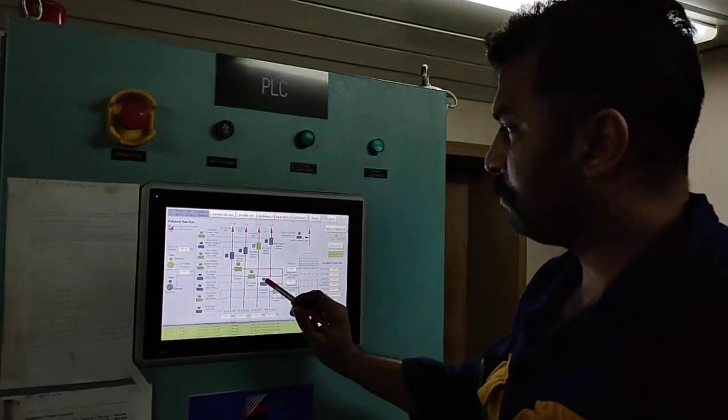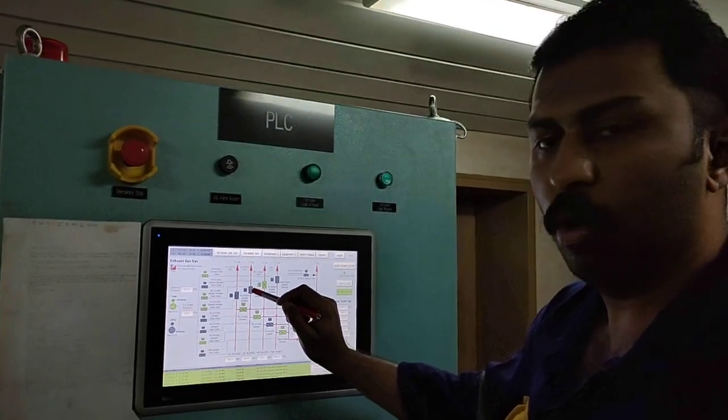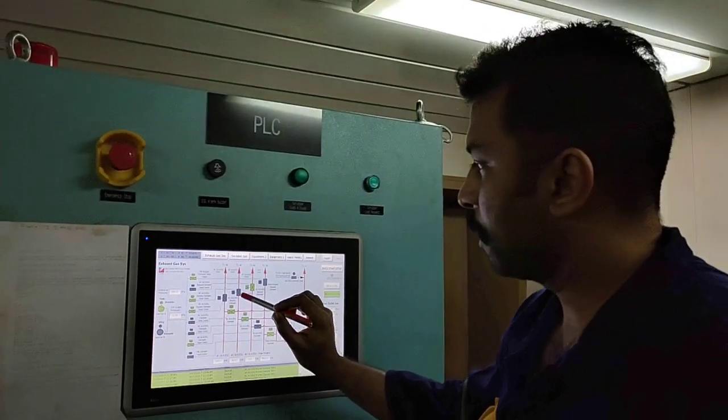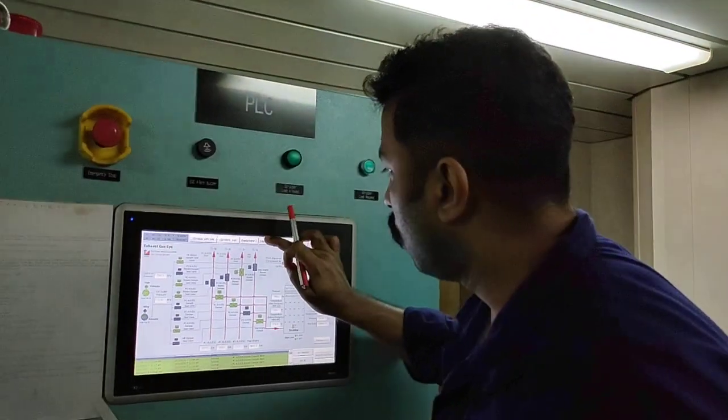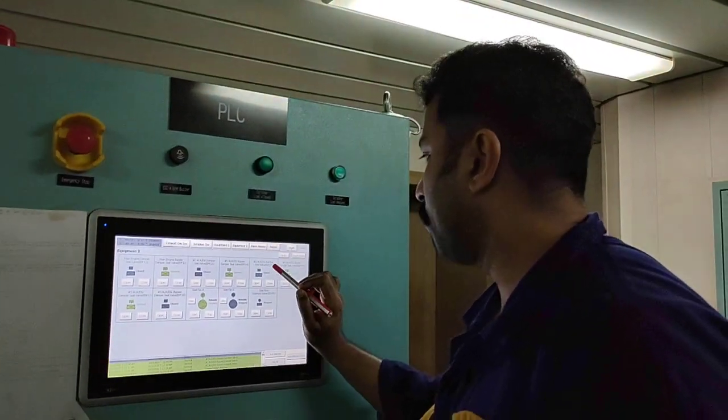If, for example, this valve is not closing, number 2 atmospheric valve is not closing, then you have to go to the equipments and you have to check number 2 DG damper valve.